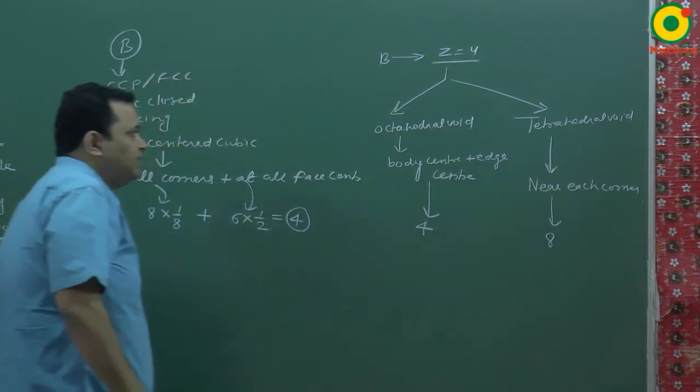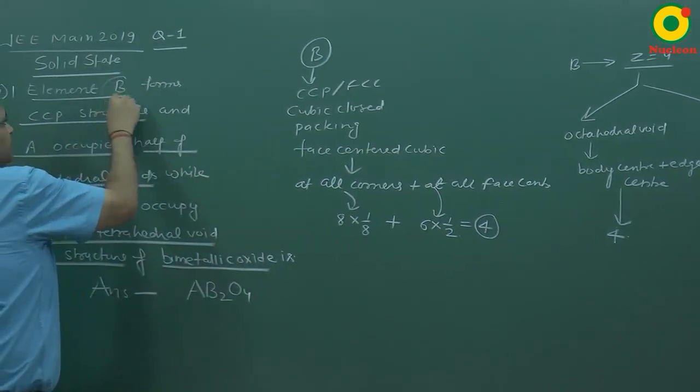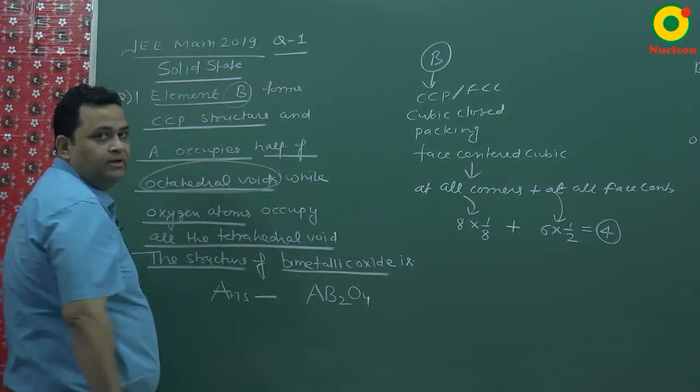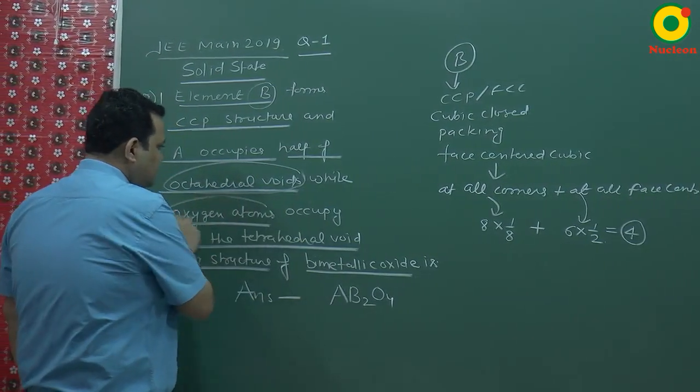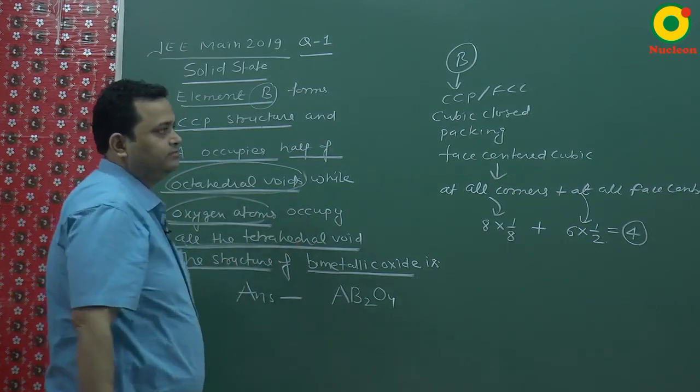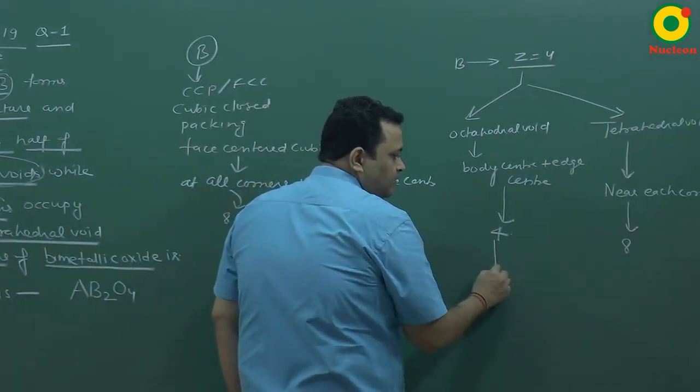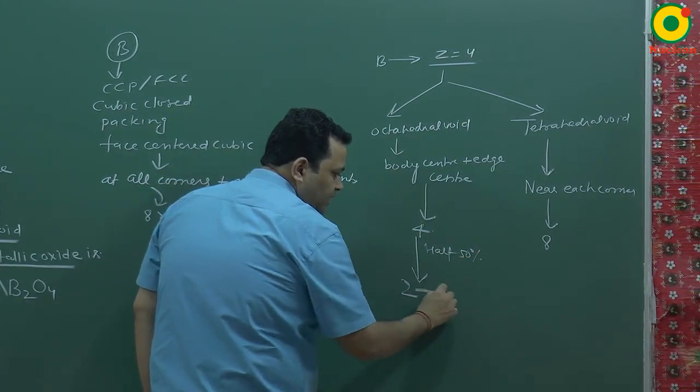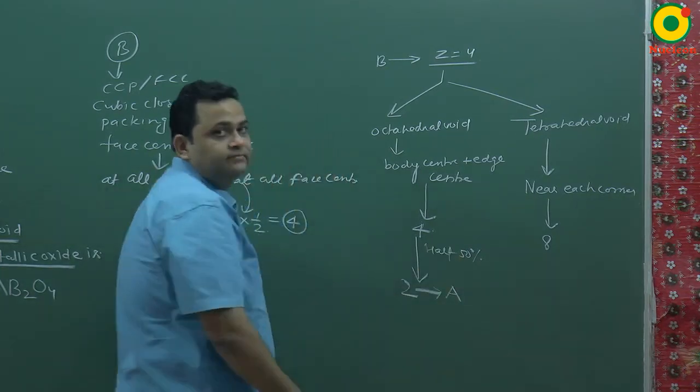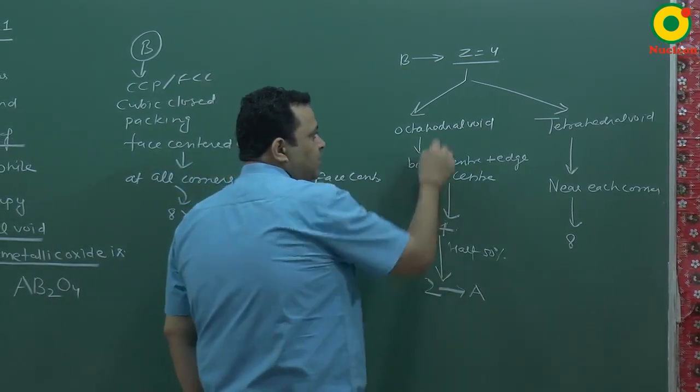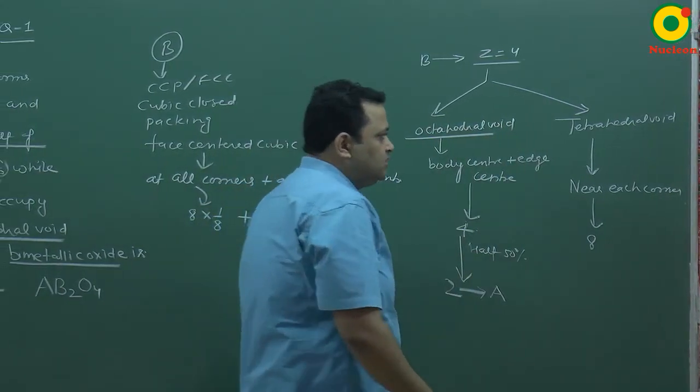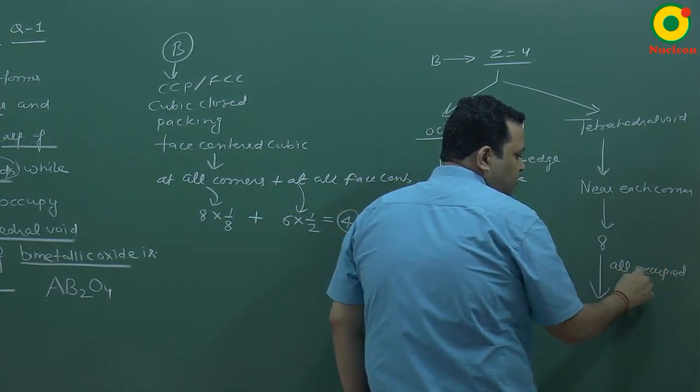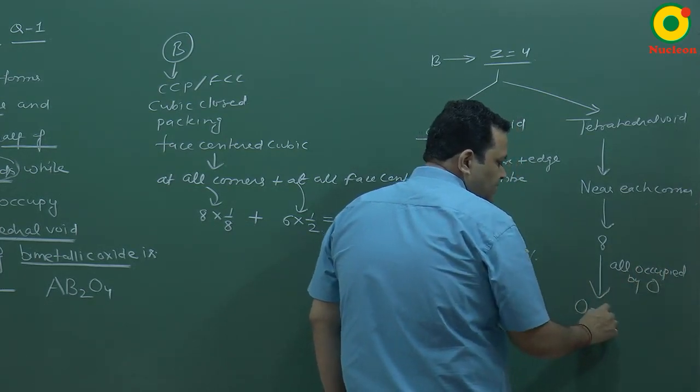Now, what is the question? The question is that B is arranged a CCP structure and A occupies half of the octahedral voids. A where is it? Half of the octahedral voids while the oxygen atoms occupy all the tetrahedral voids.